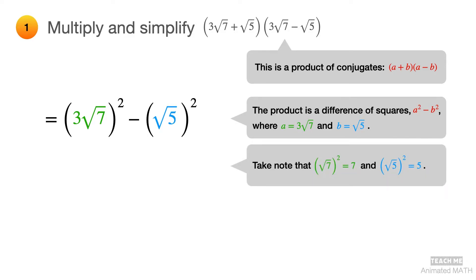To simplify this expression, take note that the square of square root of 7 is equal to 7, and the square of square root of 5 is equal to 5. Simplify further, and the final answer is 58.